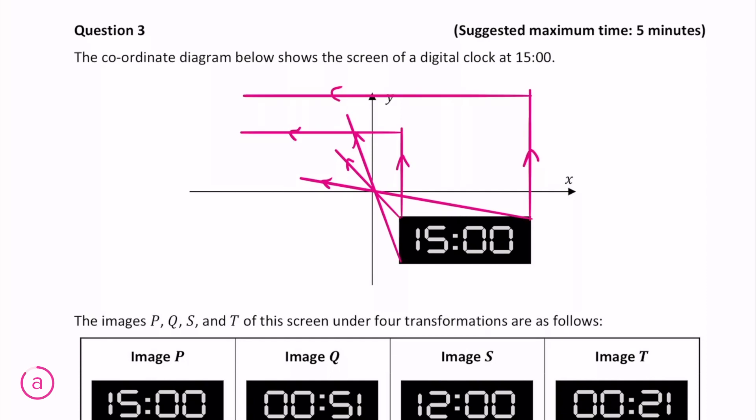This would be the same thing as first putting the object through a transformation in the x-axis and then through another transformation in the y-axis.